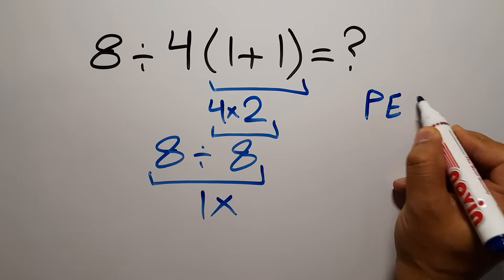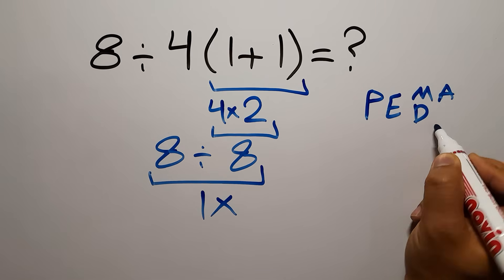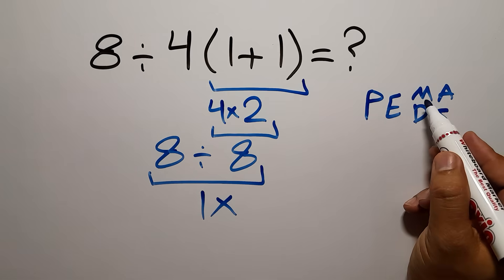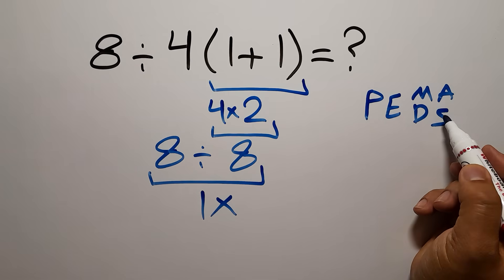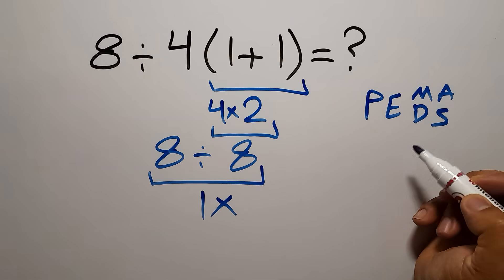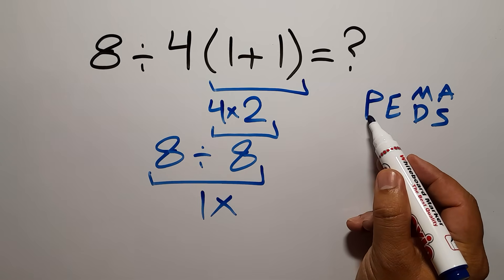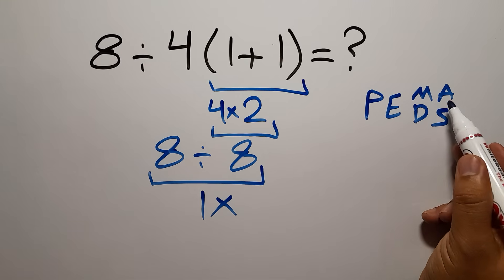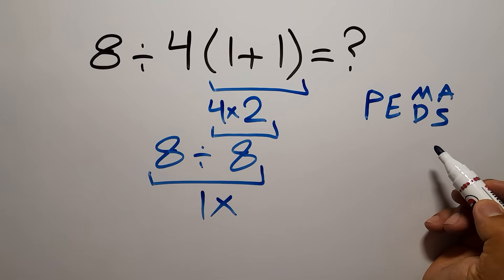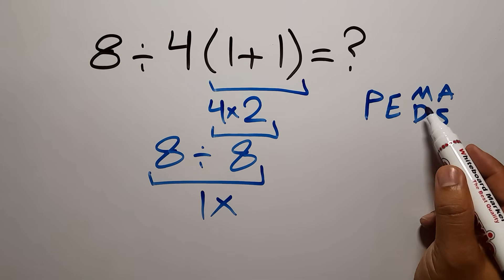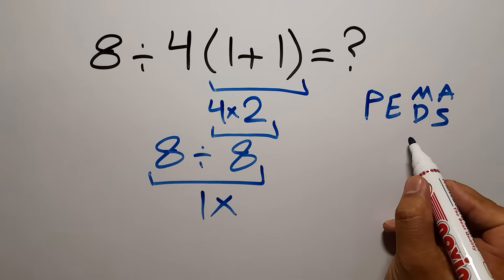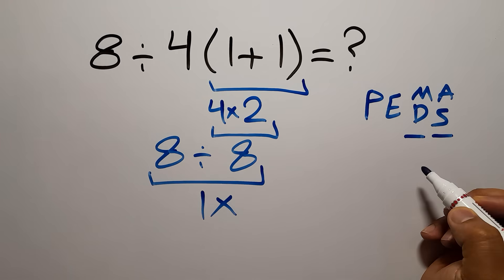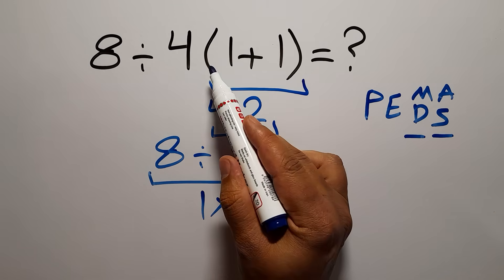According to the order of operations, which is PEMDAS: P stands for parentheses, E stands for exponents, M and D stand for multiplication and division, and A and S stand for addition and subtraction. First we do parentheses, then exponents, then multiplication or division, and finally addition or subtraction. Remember that multiplication and division have equal priority and we work from left to right, and the same applies to addition and subtraction.